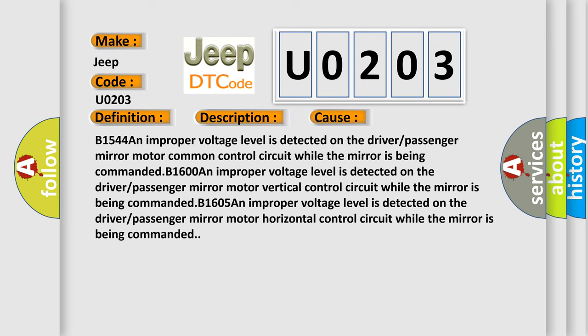B1544: An improper voltage level is detected on the driver/passenger mirror motor common control circuit while the mirror is being commanded. B1605: An improper voltage level is detected on the driver/passenger mirror motor horizontal control circuit while the mirror is being commanded. The Airbag Reset website aims to provide information in 52 languages.